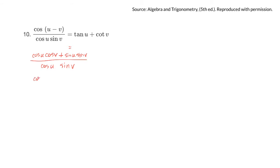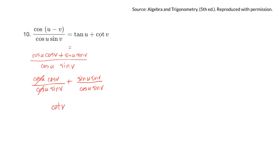What I could do is write each of the terms over the denominator separately. So that gives: cos u · cos v over cos u · sin v, plus sin u · sin v over cos u · sin v. Here the cos u's cancel, and cos v over sin v — that's the same angle — so I can write that as cot v. And here I have sin u over cos u, and sin v over sin v — sine over cosine is tan. So that gives cot v plus tan v. Done. Proved.